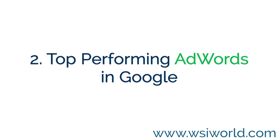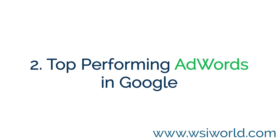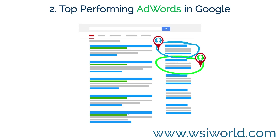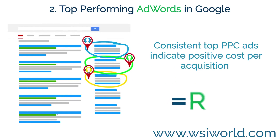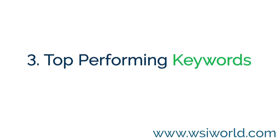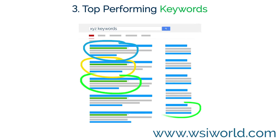Two: top-performing AdWords. In Google AdWords, ads are paid for. This means your competitors who regularly show up in the top Google ad positions are doing so because they are paying for keywords. They do it with the knowledge that it helps them gain an advantage and will positively impact their return on investment.